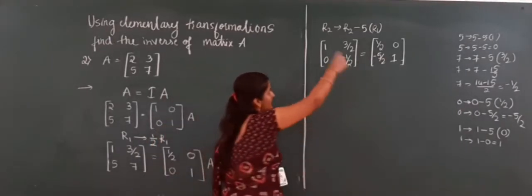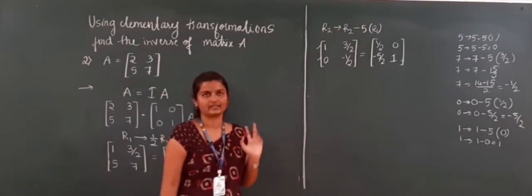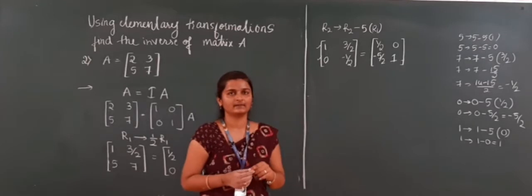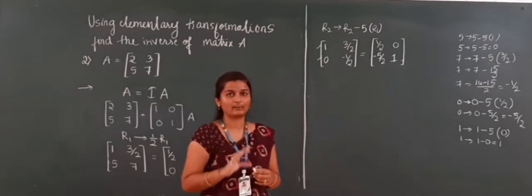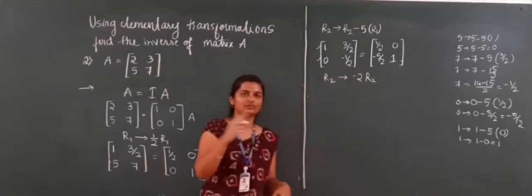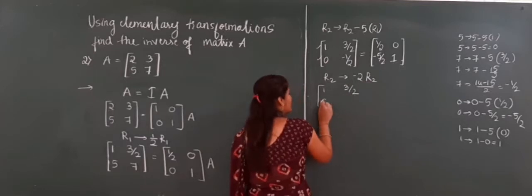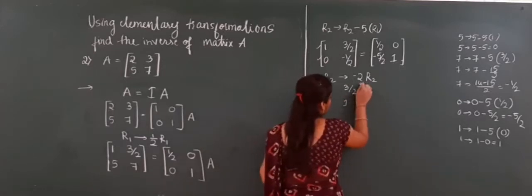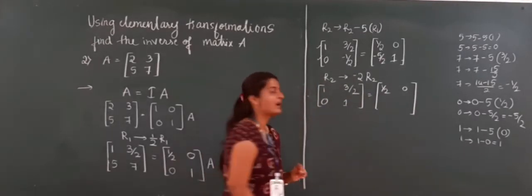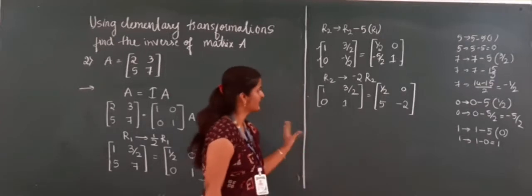After applying the second operation: now I have to make -1/2 equal to 1. For making 1, always apply the second transformation — we can multiply any number. Here -1/2 is present; if I multiply by -2, the halves cancel and minus times minus gives plus 1. So R2 changes to -2×R2. The identity side: 0 changes to -2×0 = 0, and -5/2 changes to -2×(-5/2) = 5, and 1 changes to -2×1 = -2. I have to apply this to both elements of R2.